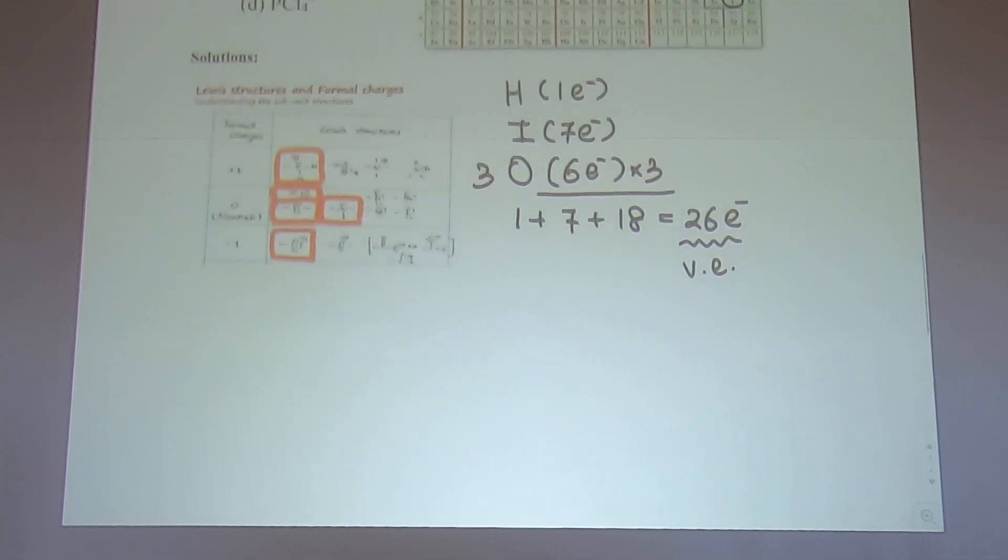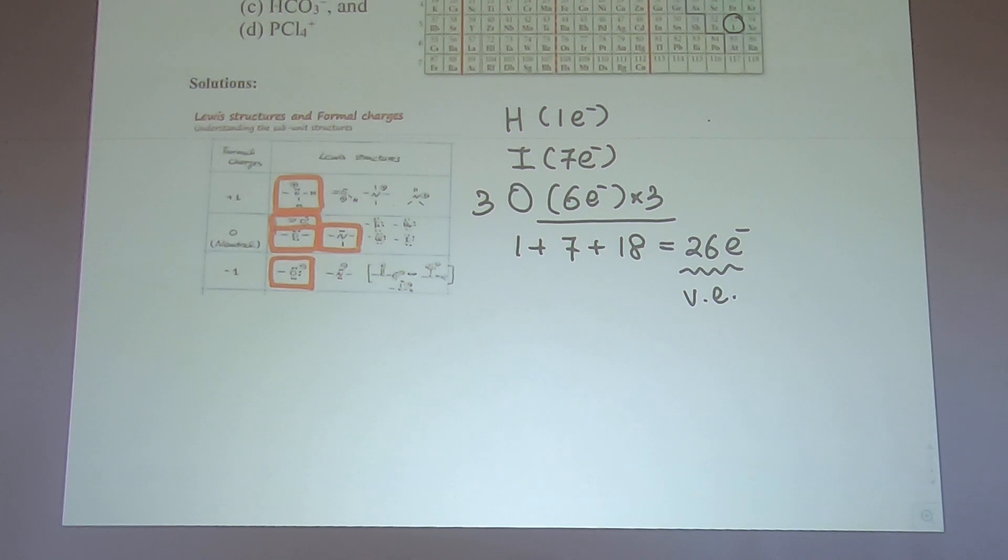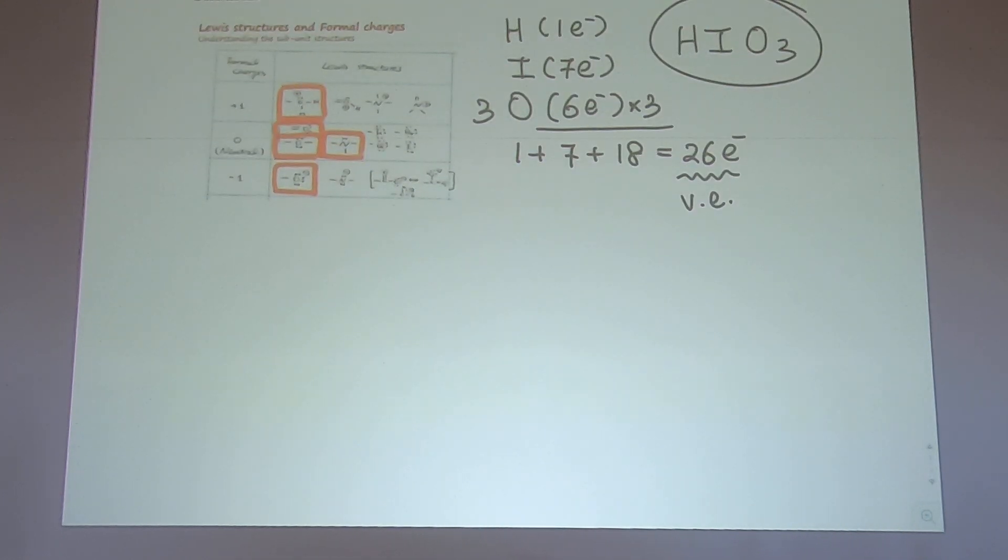You need some intuition to say, okay, if the molecule is HIO3 I want to put the most kind of exotic atom - that's not a scientific description. Something that is not hydrogen or oxygen, you want to put it in the center. Even the halogen sometimes goes in, but most cases they are in the outside. Which one do you think you want to put in the center when you write the molecule structure? Iodine goes to the center. That's my first intuition.